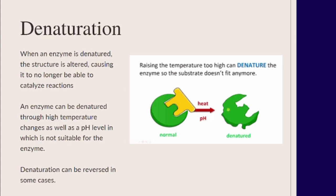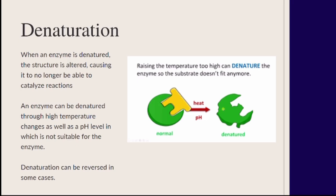Topic 3.3 is environmental impacts on enzyme function. This refers to an enzyme being denatured — that's when its structure is altered, meaning the enzyme is ruined and can't do what it's supposed to do. Enzymes can be denatured by temperature changes and pH level. If it's too hot or outside its optimal pH range, it won't carry out properly. In some cases, denaturation can be reversed if you return to the optimal range.